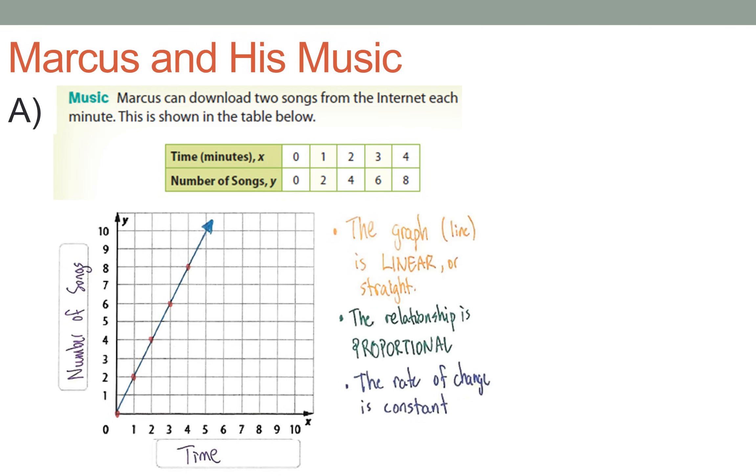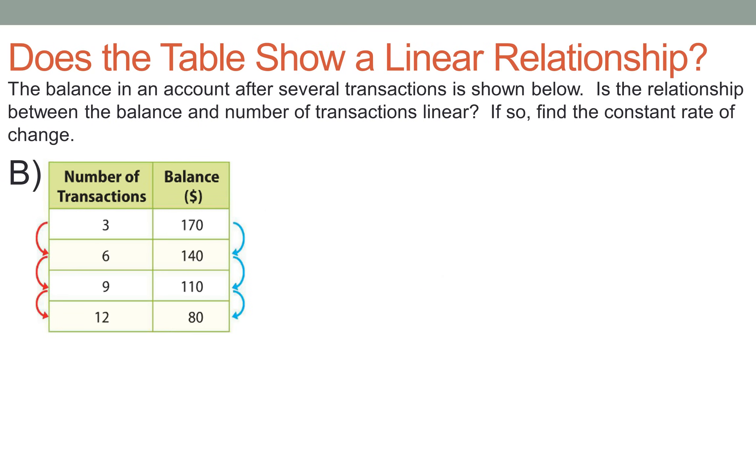So let's get into the most complicated example that I can possibly make up right here. All right, so does this table show a linear relationship? For part B, we're looking at the balance in an account after several transactions, and that's shown in the table below. Is the relationship between the balance and the number of transactions linear? And if so, find the constant rate of change.